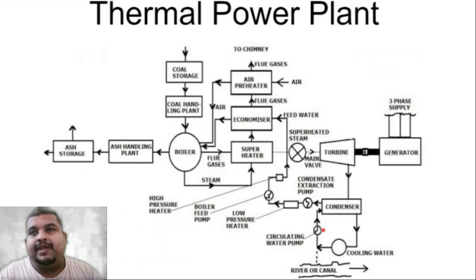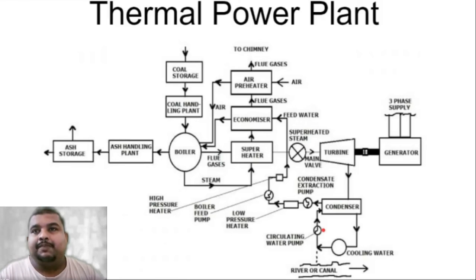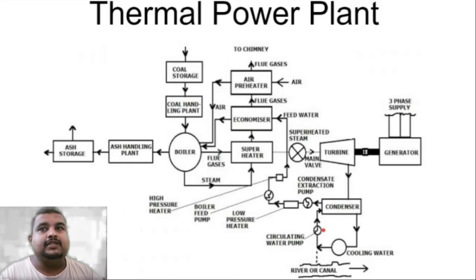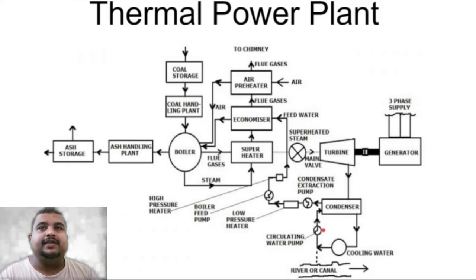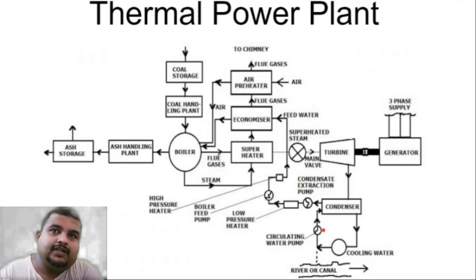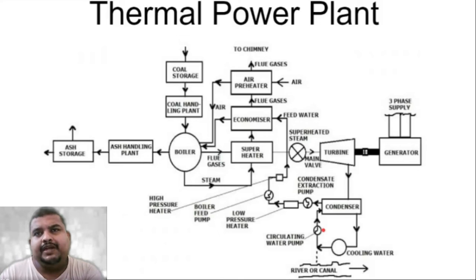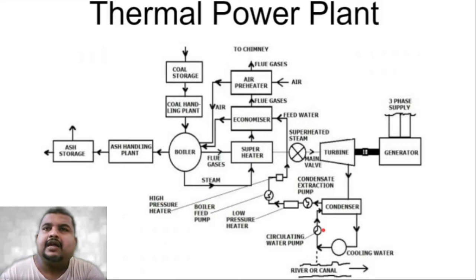The superheated steam is delivered to the turbine via the main steam line as high pressure steam. To recap the complete feed water and steam cycle: turbine → low pressure steam → condenser → cooling water → CEP → low pressure heater → BFP → economizer → boiler → steam → superheater → back to turbine. Note that in the diagram the superheater is shown outside the boiler, but in real life the superheater mechanism is inside the boiler.